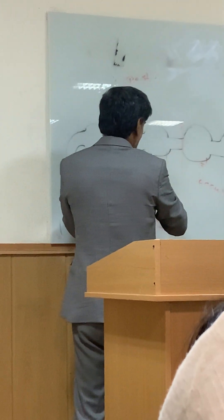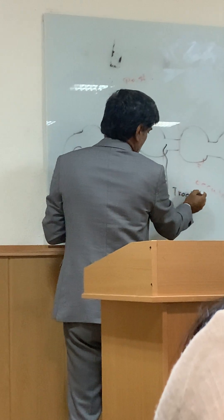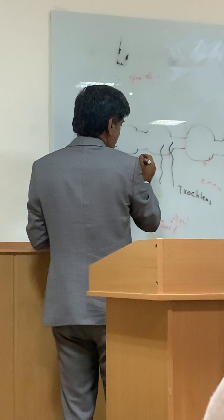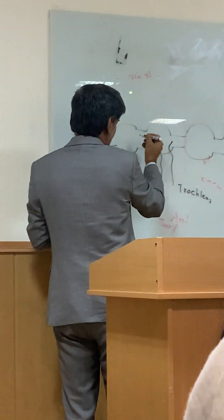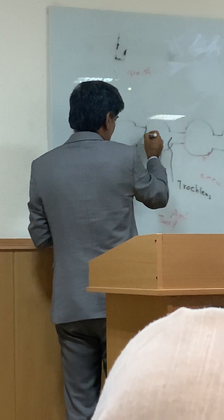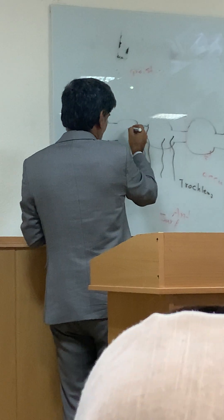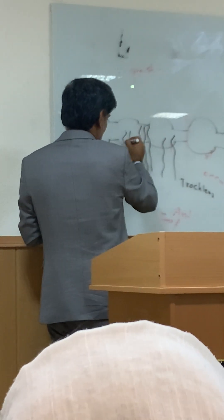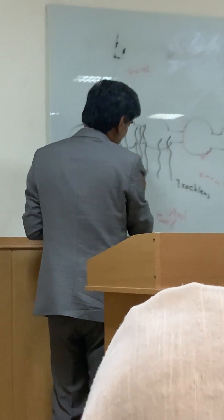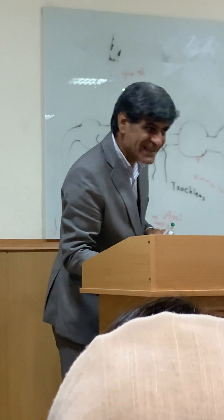Olaf and four: trochlear, trochlear, trigeminal, and trigeminal, trochlear, trigeminal, abducens, facial, vestibulocochlear, glossopharyngeal, vagus, accessory, and hypoglossal. Olaf emerges from the brainstem.